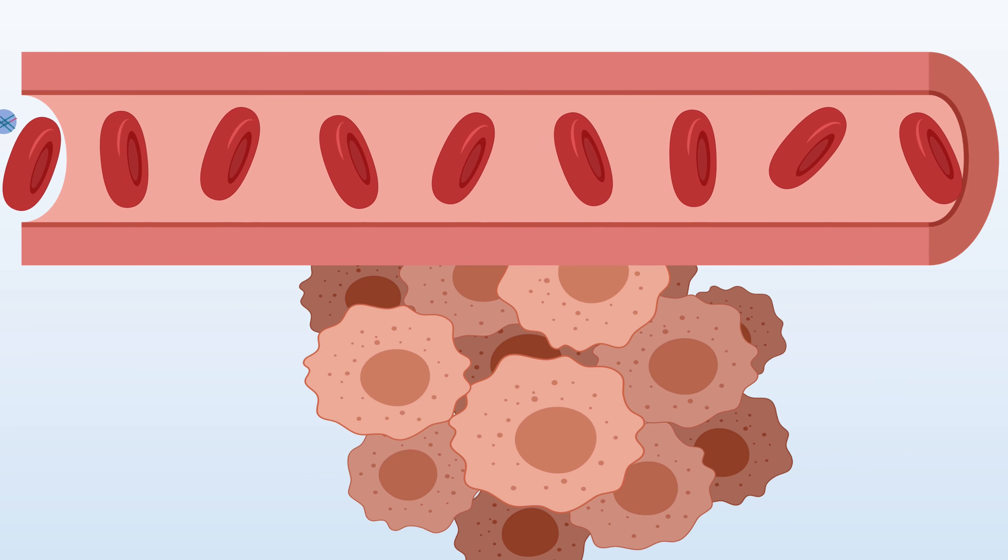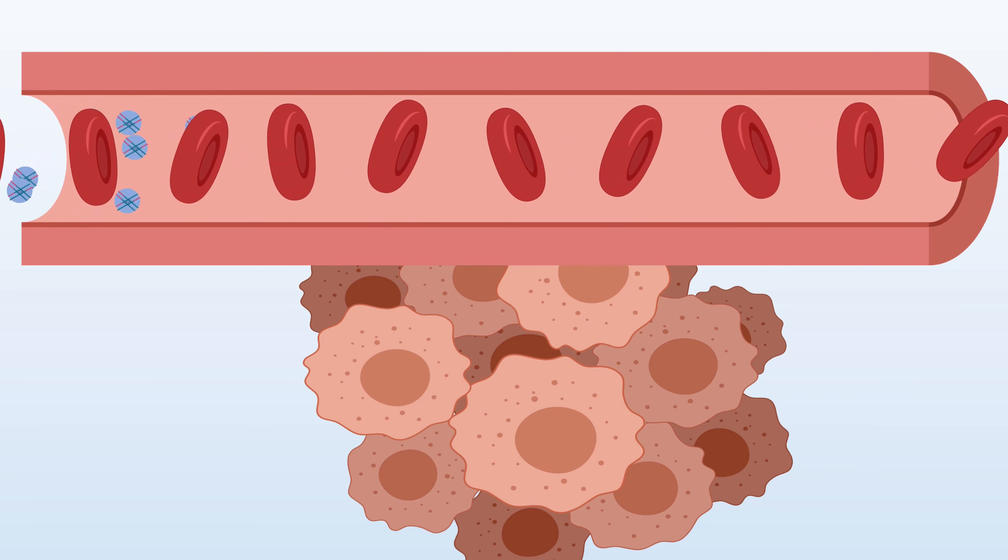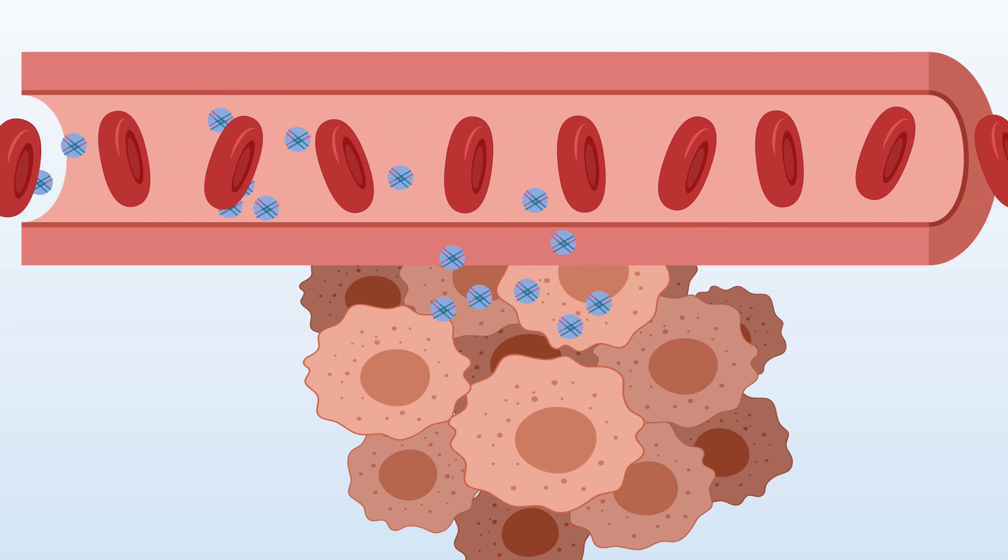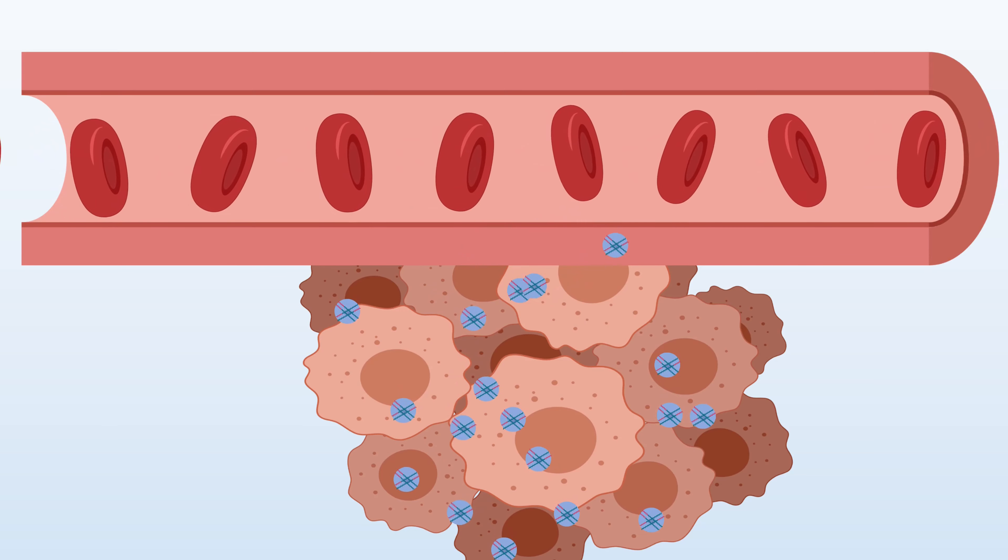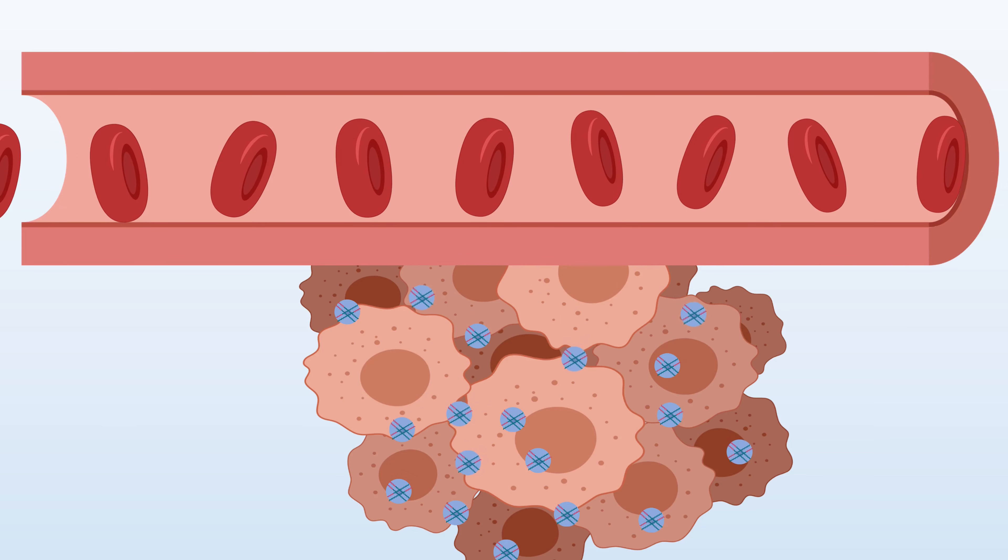Nanogels are able to reach cells, such as those of a tumor, due to their soft nature and small size. A nanogel can be designed so it can penetrate the body's tissues to arrive in the correct spot. Some nanogels can even squeeze through pores ten times smaller than them.